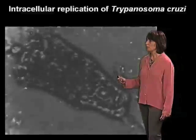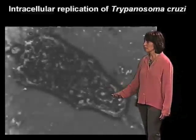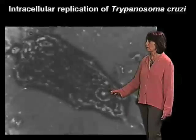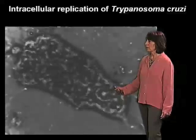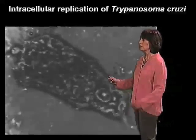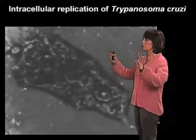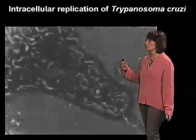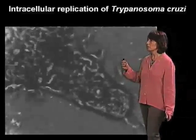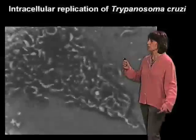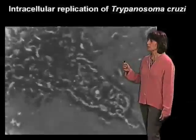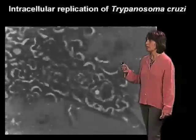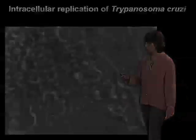We're going to be able to see in this cell that the nucleus is already quite degenerated, and we're going to be able to see the moment in which the plasma membrane breaks down and these parasites are released into the medium. This is how they reach circulation, and they can then be taken up by the insect during a blood meal.